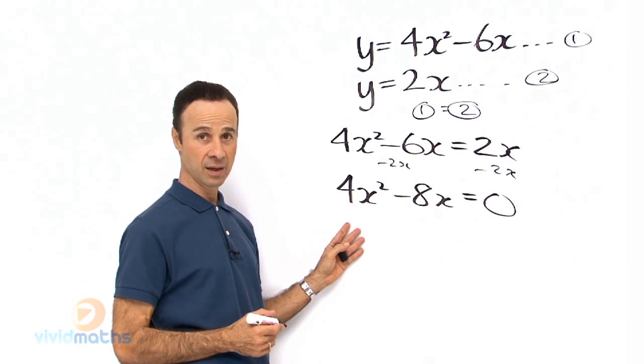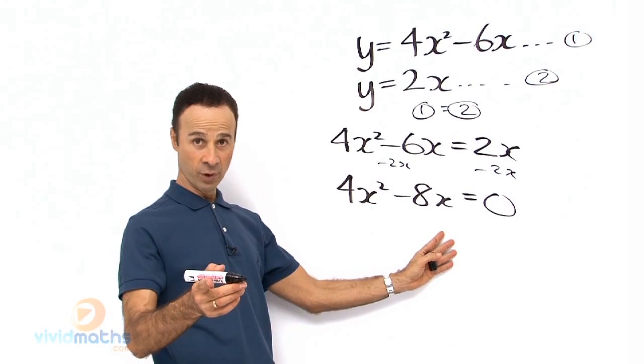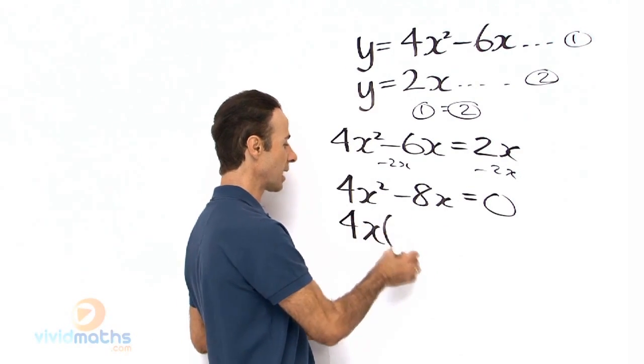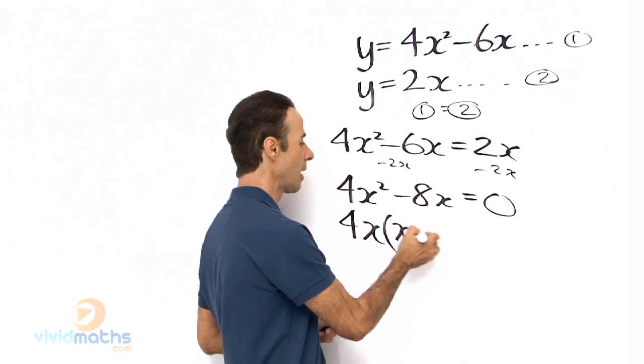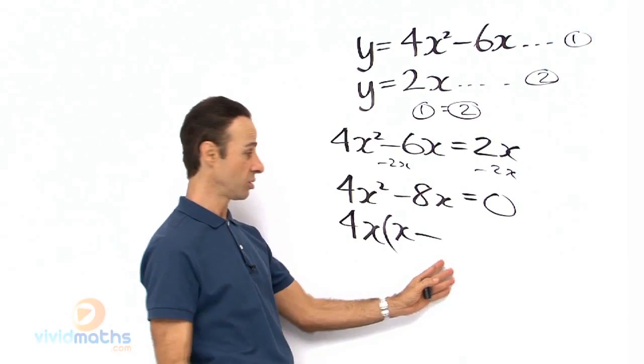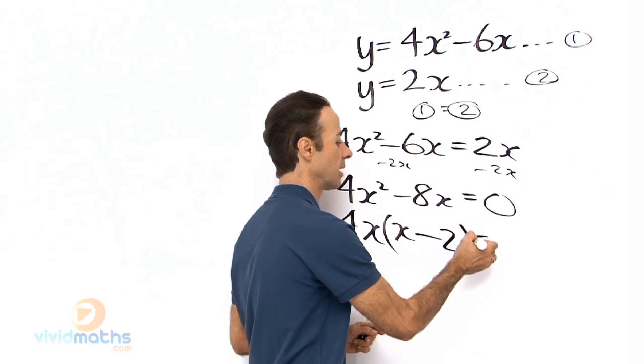We could take the highest common factor, 4x for those of you that picked it, 4 marks for you. 4x bracket, then we have x here minus, 4x times what gives me 8x, that would be a 2, yes. Make that equal 0.